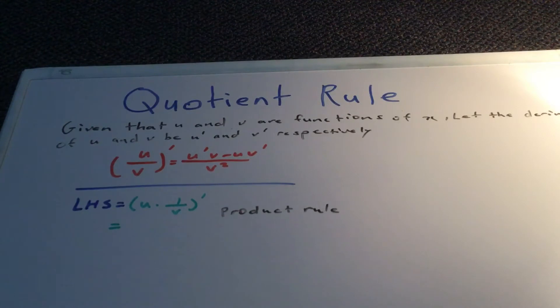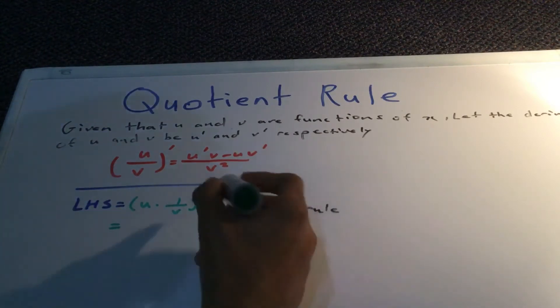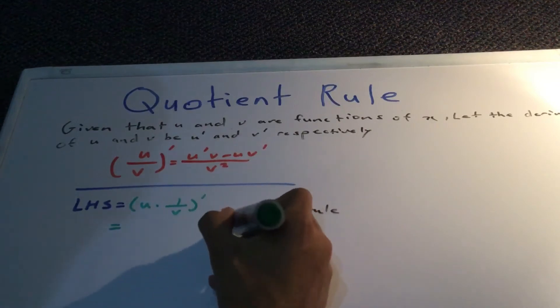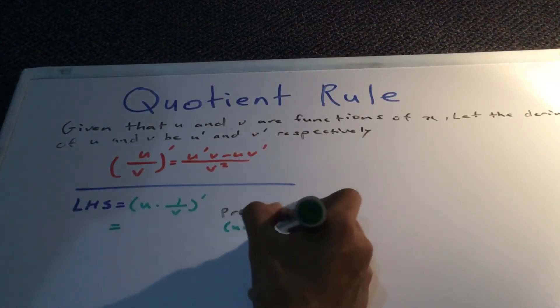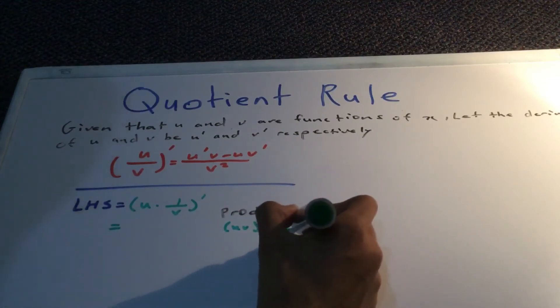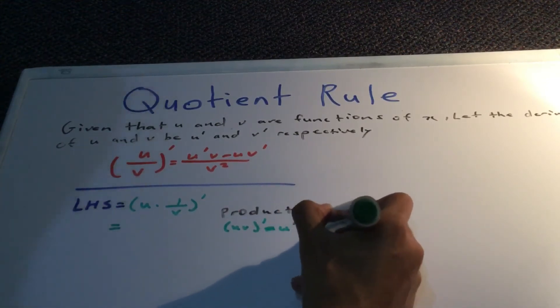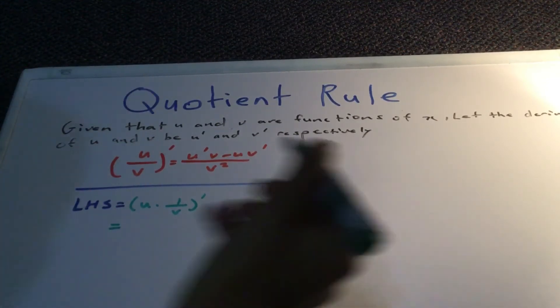So using the product rule, if you don't already know the product rule, I'll write it over here for you. It was (uv) prime, which is equal to u prime times v plus u times v prime.